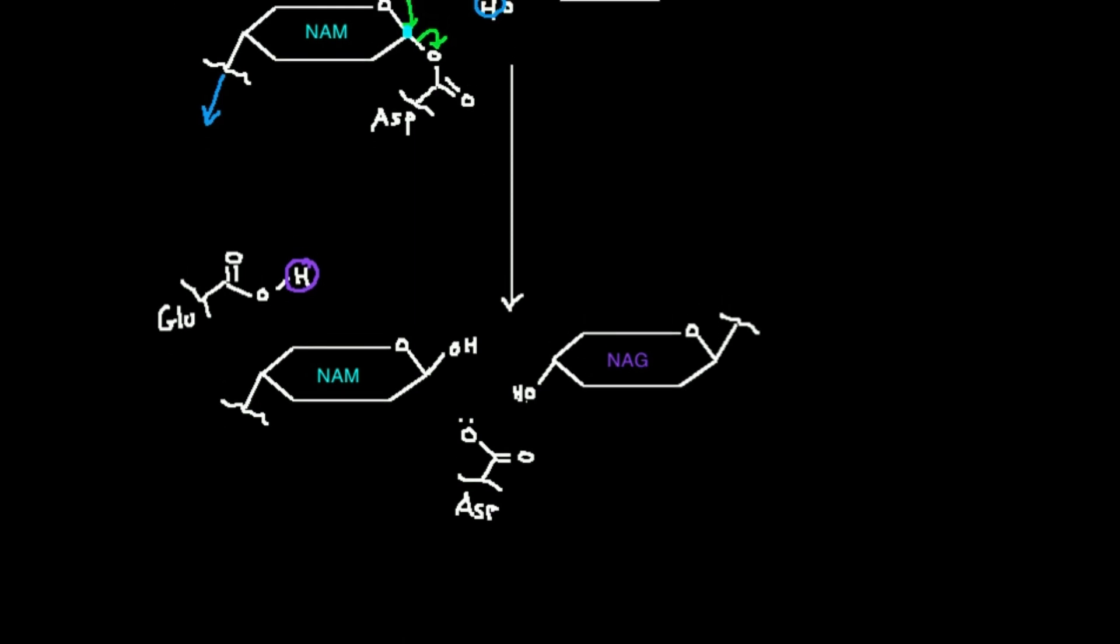So what do we ultimately have here? We get our aspartate back down here, our protonated glutamic acid, and then this part of the NAM, and then everything else before it, and then this part of the NAG, everything else after it.